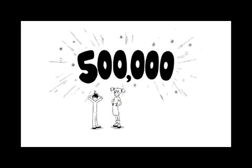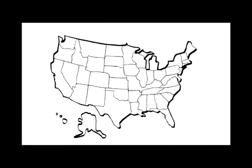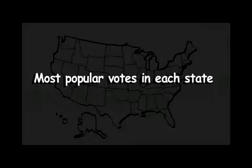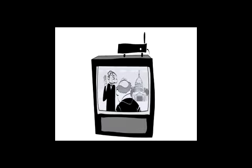You might wonder how it's possible for one candidate to win the nationwide popular vote but not win enough electoral votes to be elected president. It's possible because all but two states have a winner-take-all system, meaning the candidate who receives the most popular votes in the state receives all of that state's electoral votes — even if the margin is very small. Bush narrowly won the popular vote in Florida and in so doing won all of Florida's 25 electoral votes, giving him enough to win the election.